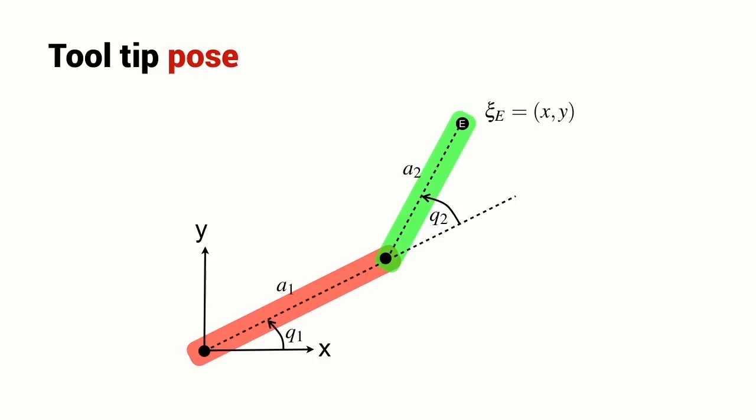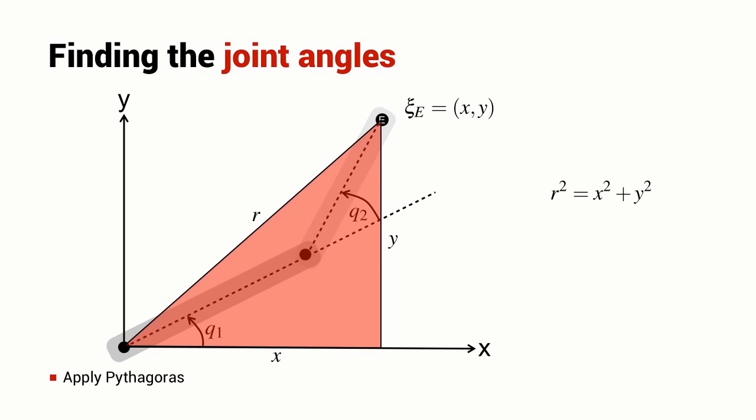We saw this simple two-link robot in the previous lecture about forward kinematics. The tooltip pose of this robot is described simply by two numbers, the coordinates X and Y with respect to the world coordinate frame. So, the problem here is that given X and Y, we want to determine the two joint angles Q1 and Q2. The solution that we're going to follow in this particular section is a geometric one. We're going to start with a simple piece of construction. We're going to overlay the red triangle on top of our robot. We know that the endpoint coordinate is X comma Y. The vertical height of the triangle is Y. The horizontal width is X and using Pythagoras theorem, we can write R squared equals X squared plus Y squared.